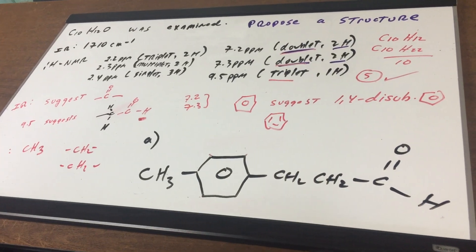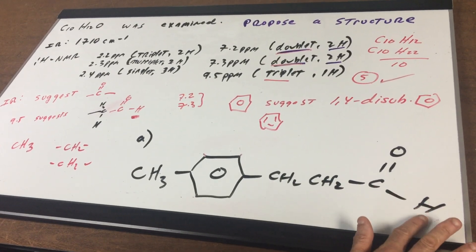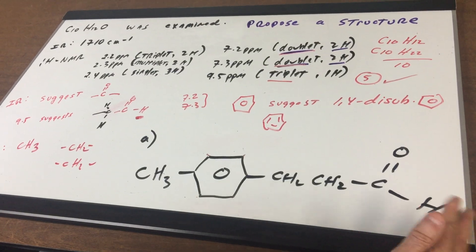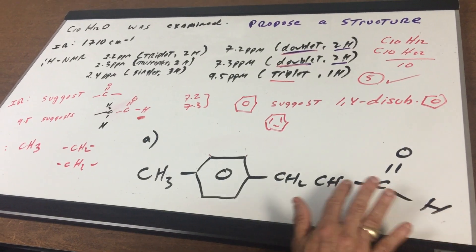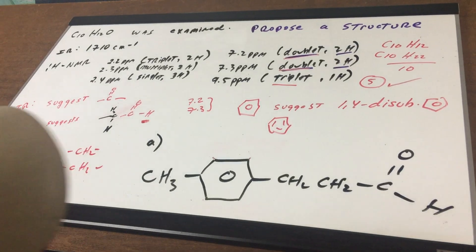On the DAT it would be a piece of cake. Always go to the signal that's the most down field and the minute you would have saw this you would have said, oh it's an aldehyde, it's around nine-ish. Nine-ish would have gave a triplet and you could probably knock out almost all the choices.